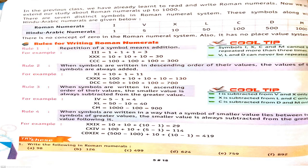Fourth rule: when a symbol of smaller value lies between two symbols of greater value, the smaller value is subtracted from the greatest value following it. For example, XIX — X and X repeat so 10+10=20, then IX means 10 minus 1 = 9, so the number is 29. Note: I is subtracted from V and X only; X is subtracted from L and C only; C is subtracted from D and M only.